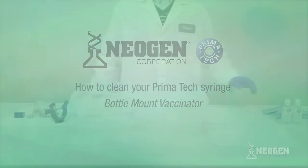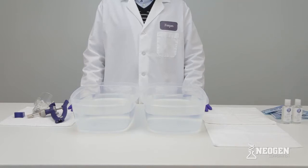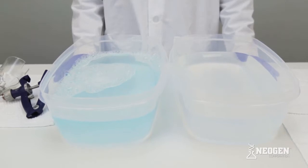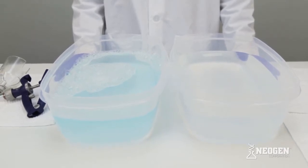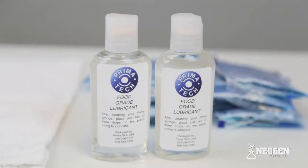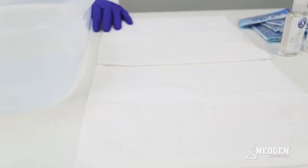To clean any Primatech syringe you will need a clean workplace free from wind and dust, two large bowls or buckets, one with warm water, one with dish soap, food grade oil, and clean towels for drying.